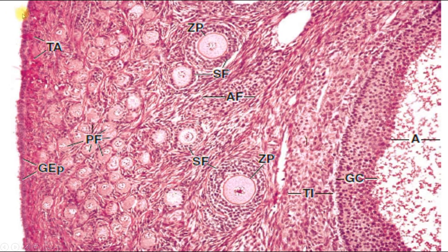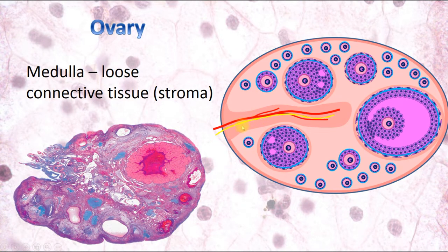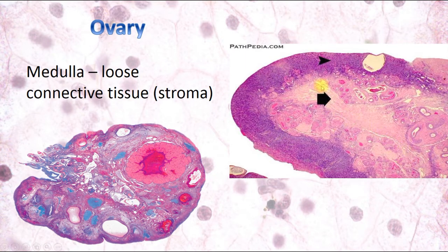The medulla of the ovary contains only stroma — loose fibrous connective tissue — and no parenchyma. It is the innermost part of the ovary, forming its core, and contains the largest blood vessels, lymphatic vessels, and nerves that enter the ovary through the medulla and send small branches to the cortex. The medulla does not provide ovarian functions but supports the cortical structures.